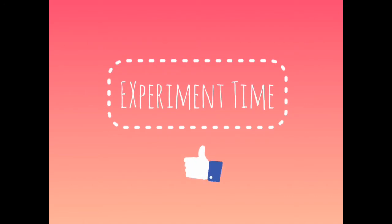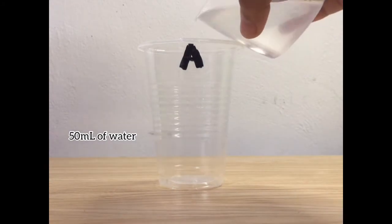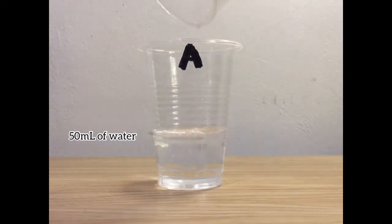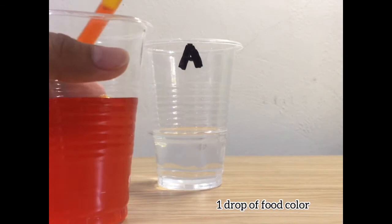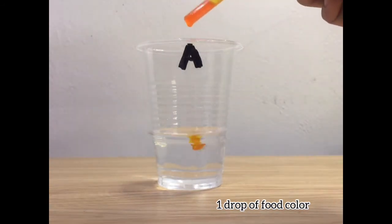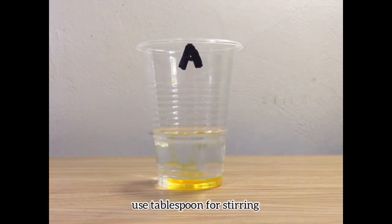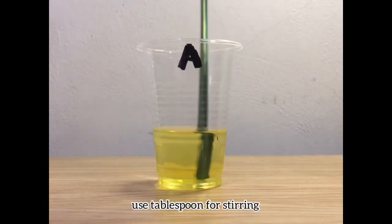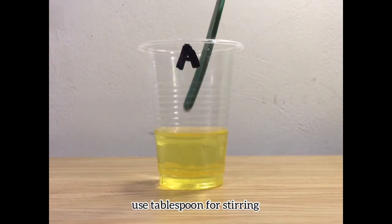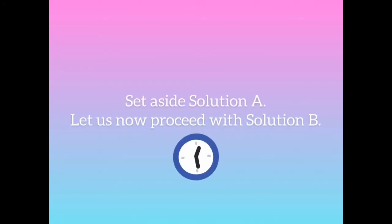Experiment time! First, put 50 ml of water on cup A. Then add one drop of food color on cup A with 50 ml of water. Use tablespoon for stirring. Stir the solution until all the food color is dissolved in water. This is now the solution A. Set aside solution A.